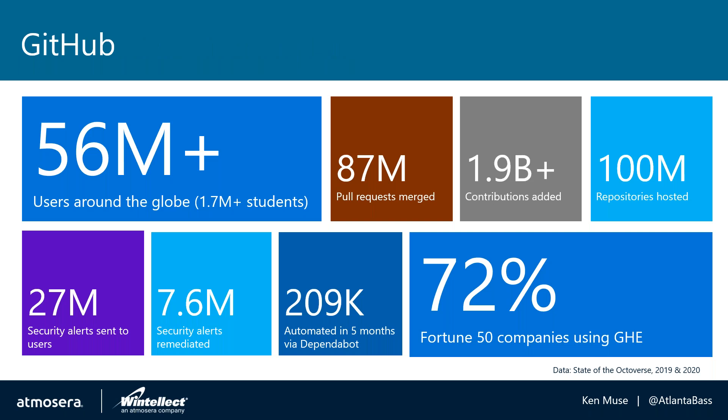GitHub is a very well-known and well-regarded application lifecycle management tool that enables many of these DevOps practices. It has a high number of users around the globe — over 56 million by the end of last year. If someone's coming out of college or most companies, they'll not only have heard of GitHub, they may have actively been using it.